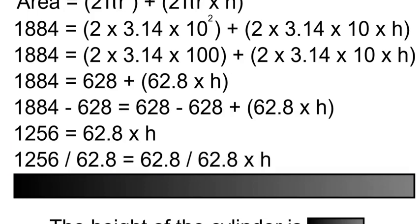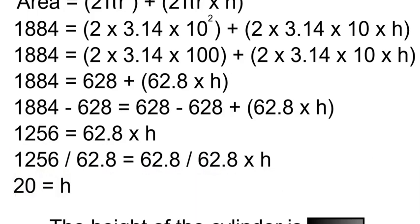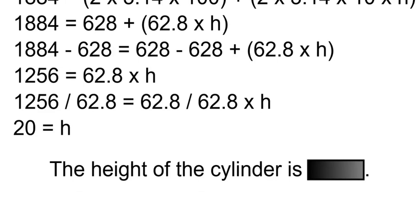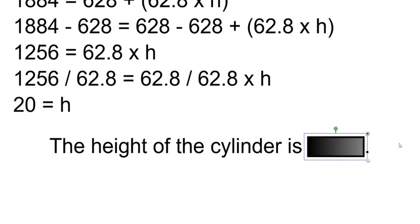To remove the 62.8, we'll have to divide both sides by 62.8. So 1,256 divided by 62.8 equals 20, and the 62.8s will cancel on the right-hand side, leaving me with h. Therefore, the height of the cylinder will be 20 centimeters.